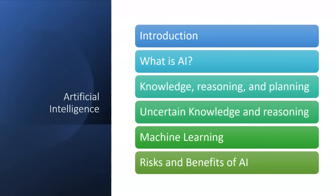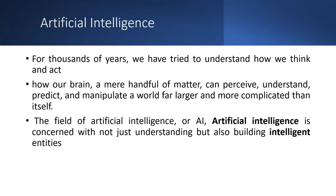In this chapter we will see what AI is and its relation to knowledge reasoning, planning, uncertain knowledge reasoning, machine learning, and the risks and benefits of AI. For thousands of years we have been trying to understand how we think and how we act — how our brain works, how we perceive, understand, predict, and manipulate the world. It's more complicated when you compel computers to think, act, and perceive like humans.